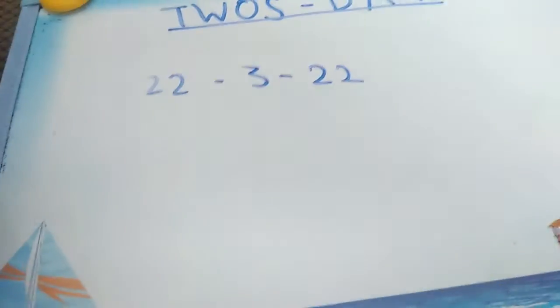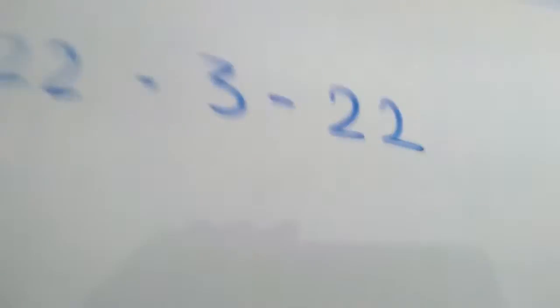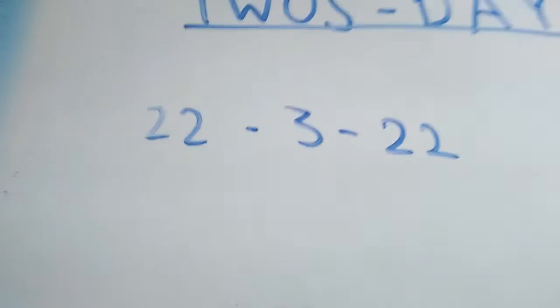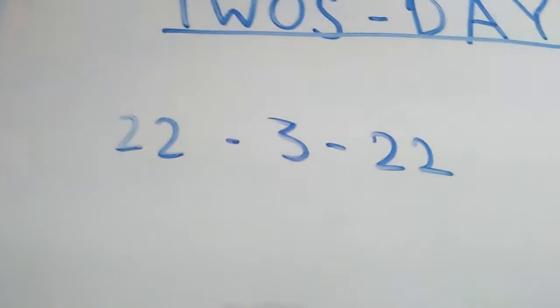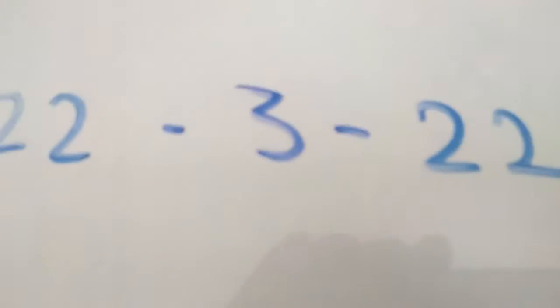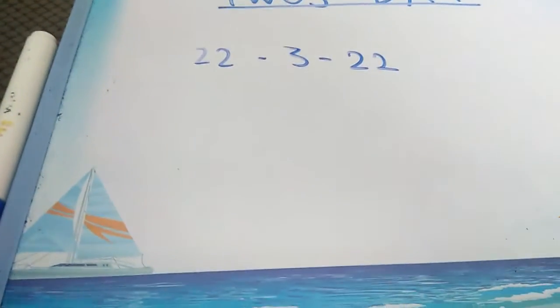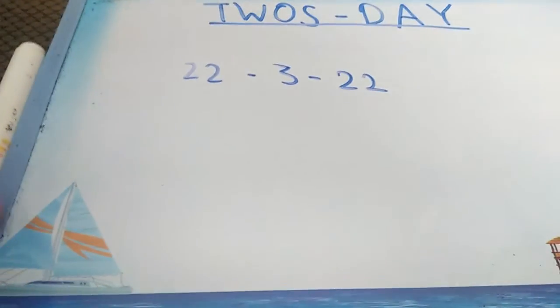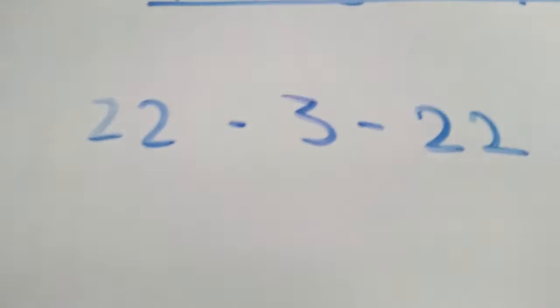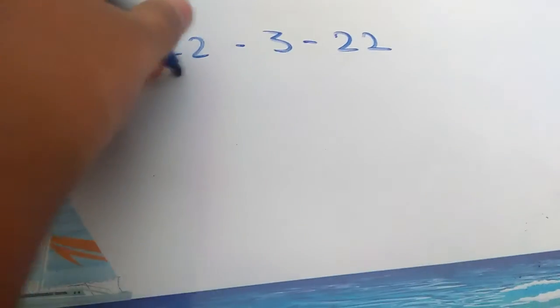Now, March copy of February — this last month — so 22 March 2022 will also be Tuesday. But there will be something acting upon this three. Do you know that 22 February 2022 was a palindrome? There's something acting upon this three, so it can also be Tuesday.